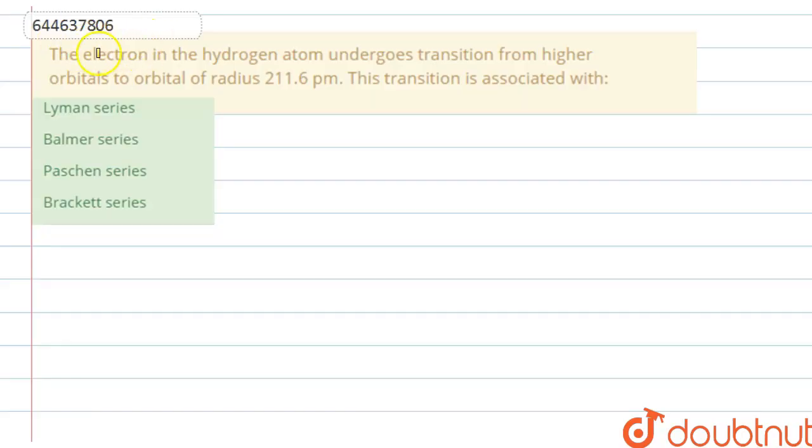Hello guys, in this question we have the electron in the hydrogen atom undergoes transition from higher orbital to orbital of radius 211.6 picometer. The transition is associated with... So we have to find out which type of transition is this. We have four options: Lyman series, Balmer series, Paschen series, and Bracket series.